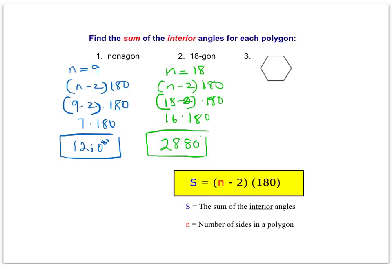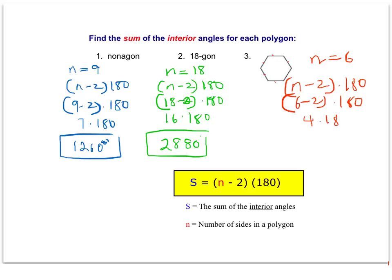All we need to do is find the number of sides. For the third one, we have to count the number of sides because it's not given to us. Make sure you count correctly — it's easy to miscount when the number is not given. If I mark them off, I see that n equals 6. A six-sided figure is a hexagon. Plugging that into the formula gives 6 minus 2 times 180, or 4 times 180, which is 720 degrees.